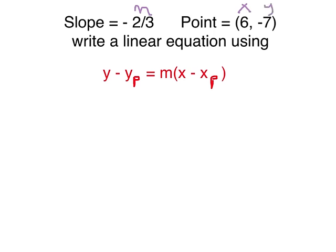Since this is the point, this is not the x variable but this is the x coordinate of the point, and this is the y coordinate of the point. So I use this format: I plug in m, which is the slope, into here. I use the x coordinate of the point — xp — into here, and the y coordinate of the point into here. This y is the y variable, not a number. This x is the x variable, not a number. Whereas yp and xp are numbers.